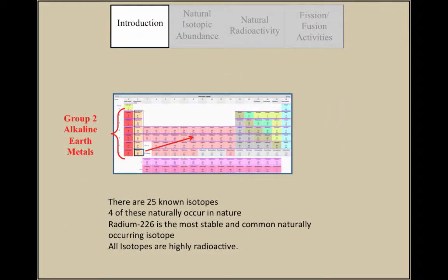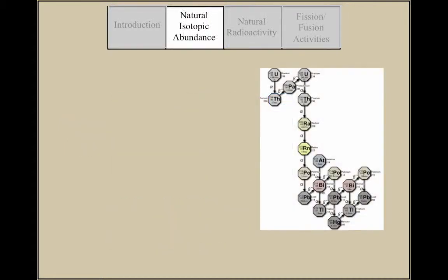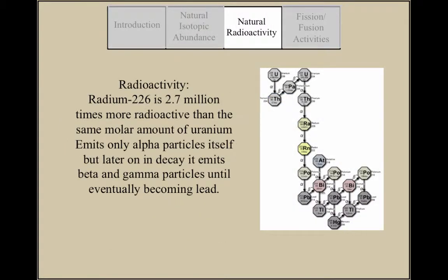Radium has 25 known isotopes, four of which are found naturally. Radium-226 is the most stable and commonly found isotope. However, it is also 2.7 million times more radioactive than the same molar amount of natural uranium.